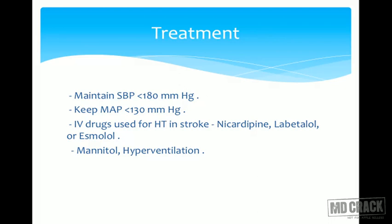For treatment, most patients present with high blood pressure. The target is to maintain systolic blood pressure less than 180 mmHg — you need not target 120 mmHg — with mean arterial pressure less than 130 mmHg. You should avoid NTG (nitroglycerin), which is the drug of choice for cardiac hypertension. The preferred drugs are labetalol, nicardipine, or esmolol.